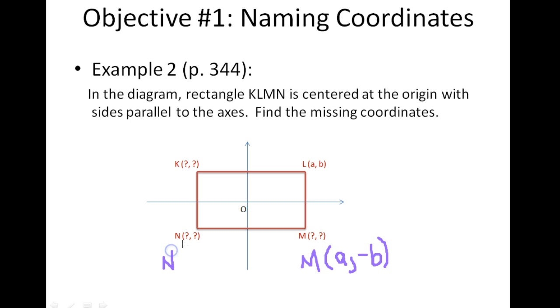Similarly, for N, we know it's going to share the same y-coordinate as M is. They're both going to lie on negative B on the y-axis.